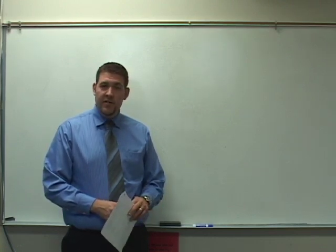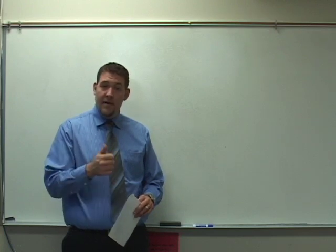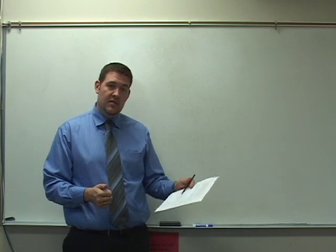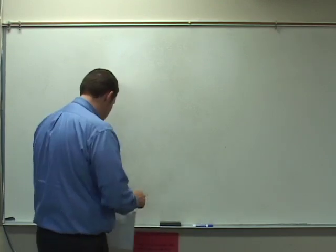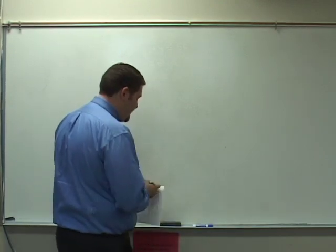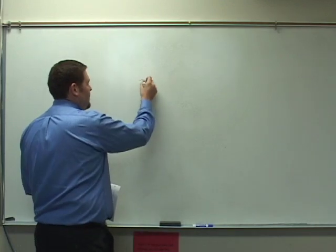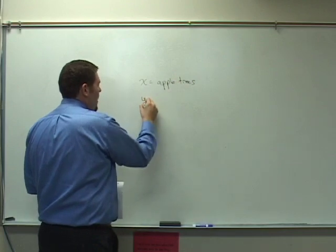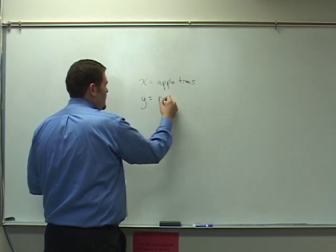So we have a couple things we don't know right now. We don't know how many trees he needs to buy, how many apple trees, and how many peach trees. So let's set up those two variables to begin. First of all we have that our x is going to be equal to apple trees, the number of apple trees. And our y is going to be equal to the number of peach trees.